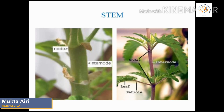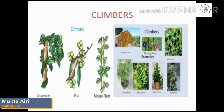Stems are of two types: climbers and creepers. Climbers — the stems of some plants are weak and they cannot stand on their own. Plants which need the support of another plant or a stick to stand are called climbers. Some climbers have coiled spring-like parts called tendrils to hold onto the support. Some examples of climbers are grapevine, pea, and money plant.